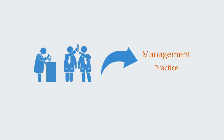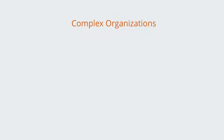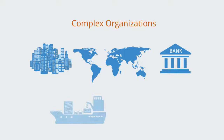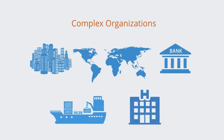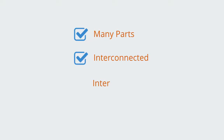Examples of these complex organizations might be cities, international politics, multinational corporations, global logistics networks, or healthcare systems. These are all complex organizations due to their nature of having many parts that are highly interconnected, interdependent, and autonomous.